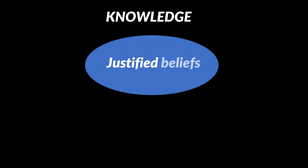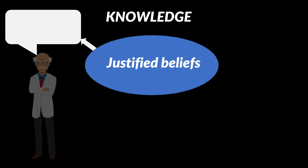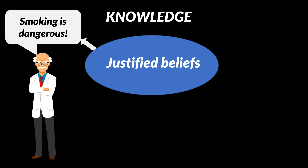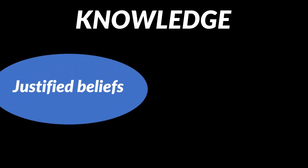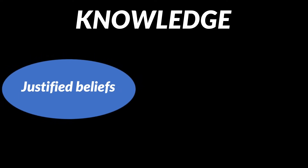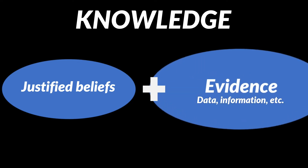Knowledge can be seen as justified beliefs. For example, in relation to statements like 'smoking is dangerous' and 'the diet is fair.' We also talk about knowledge in a broader sense, as covering justified beliefs — which is knowledge in a more narrow sense — plus data, information, and so on; what we can call evidence.